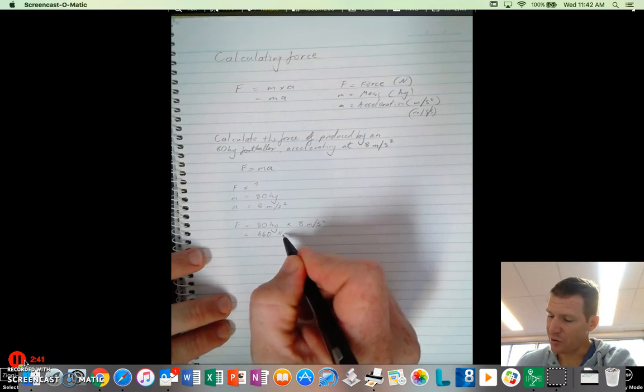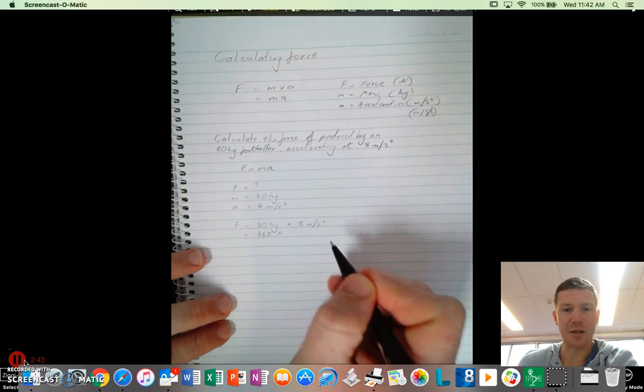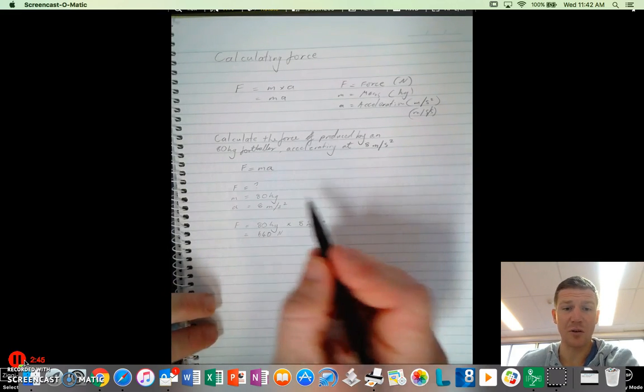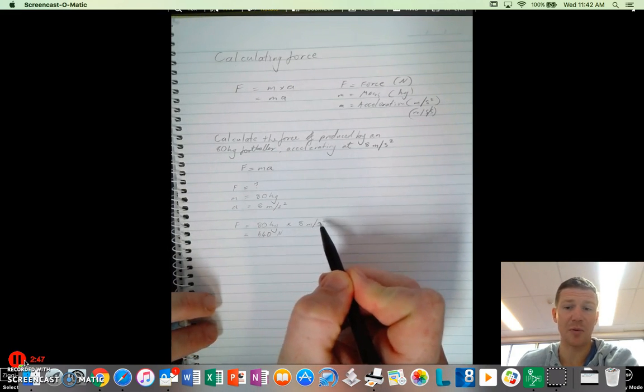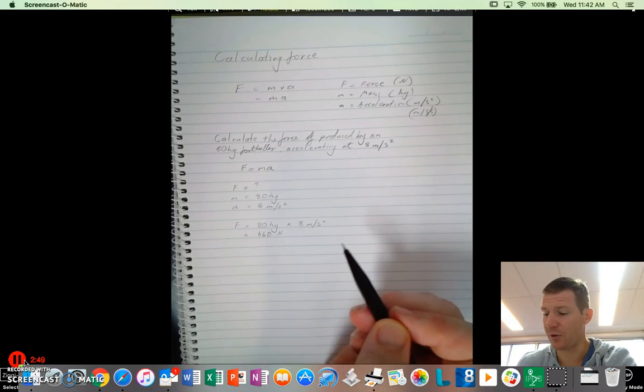Now how does newtons relate to kilograms and meters per second squared? Well essentially, one newton is one kilogram per meter per second squared. All right. And that's how it works.